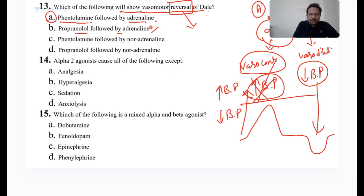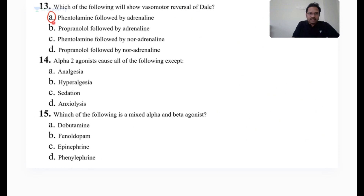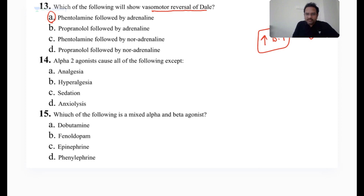Propranolol followed by adrenaline? No — propranolol blocks beta receptors and causes only the initial increase in BP, as in the Dale phenomenon. Phentolamine followed by noradrenaline is also wrong because noradrenaline activity is stronger at alpha than beta receptors, so beta-2 vasodilation will not be there. Propranolol followed by noradrenaline is also wrong because propranolol blocks beta receptors and the reversal phenomenon will not occur. So the answer is option A. Remember: alpha-1 increases BP, beta-2 decreases BP; with an alpha-blocker, you see only the BP decrease — that is the reversal of the Dale phenomenon.